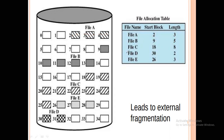If we look at file D, its starting location is 30 and its length is 2, meaning blocks 30 and 31 are stored for file D. For file C, the starting location is 18 and the total length is 8. So from 18, eight consecutive blocks are stored: 18, 19, 20, 21, 22, 23, 24, and 25. This is how contiguous allocation works.